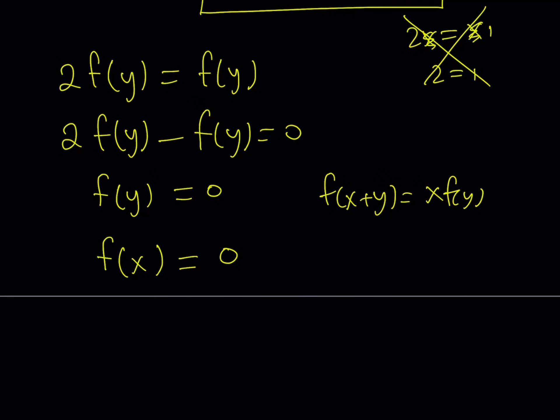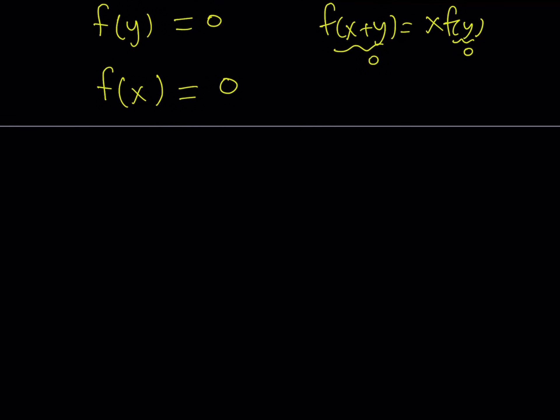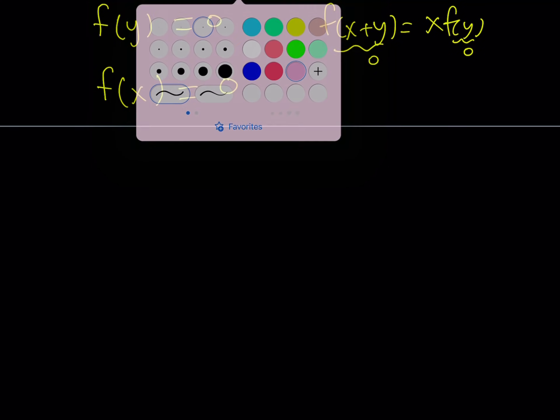Which means that any input will be mapped to 0. And if you kind of plug that in, you're going to notice that it's always true, because if this is 0 and this is 0, this is always going to be true regardless of the x value. So, our function is the 0 function. And this brings us to the end of this video.